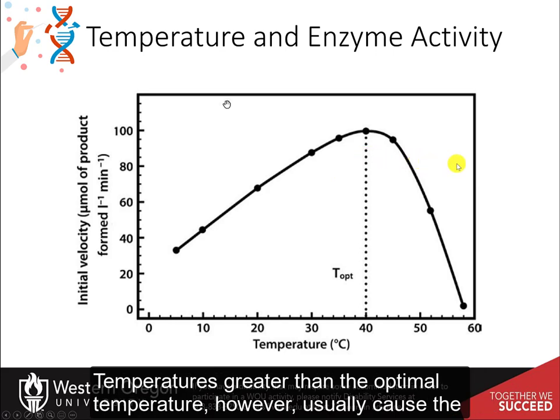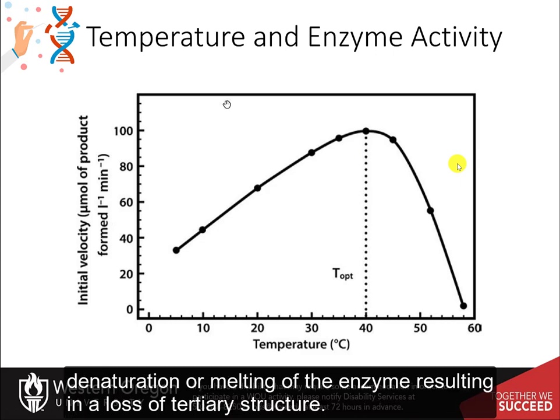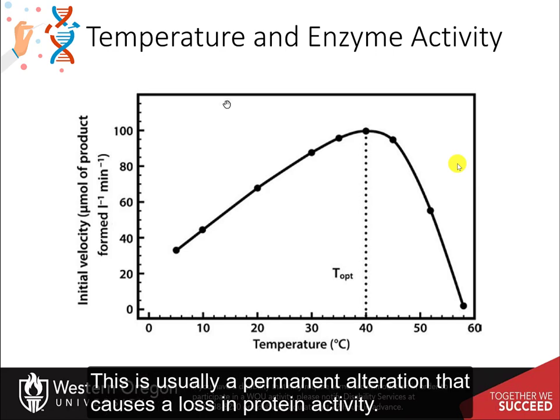Temperatures greater than the optimal temperature, however, usually cause the denaturation or melting of the enzyme, resulting in a loss of tertiary structure. This is usually a permanent alteration that causes a loss in protein activity.